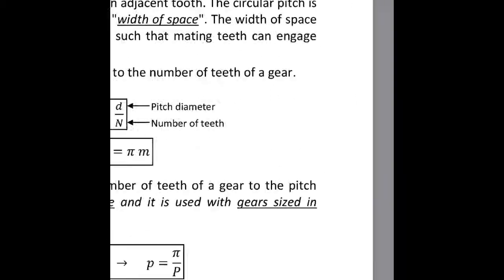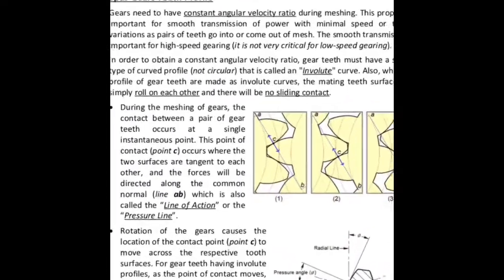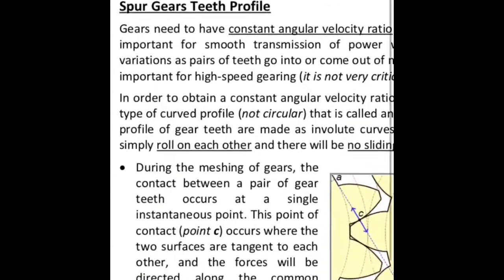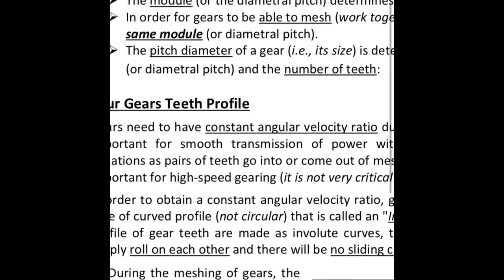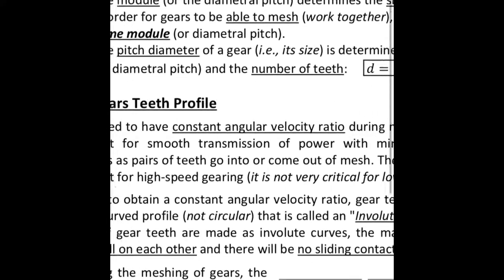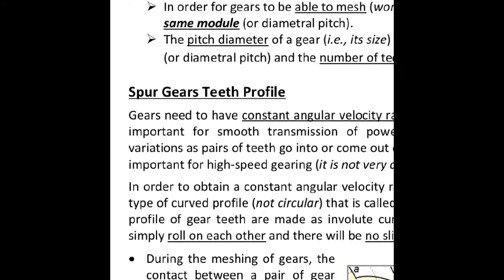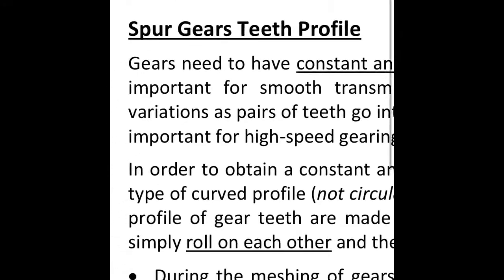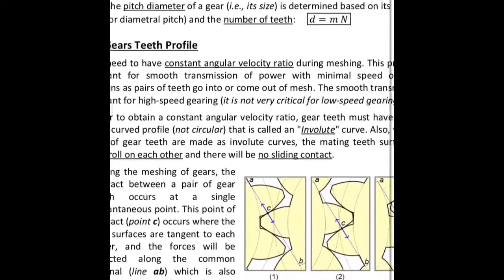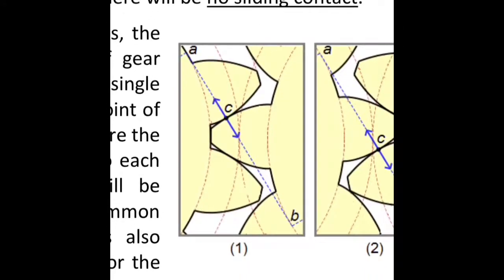Worms and worm gears transmit rotation between perpendicular shafts that are not intersecting — there is an offset between them. The worm resembles a screw which can be right-handed or left-handed. Worm gear sets are usually used when high reduction in speed is desired, with speed ratios of 3 or higher. It transmits rotation from the worm to the worm gear, but not the opposite.